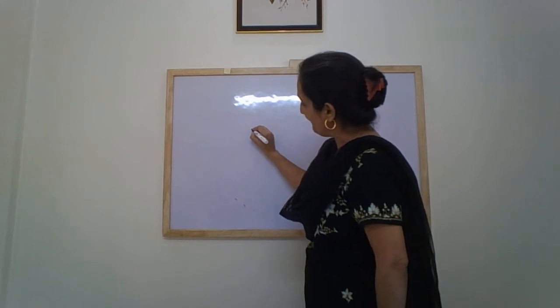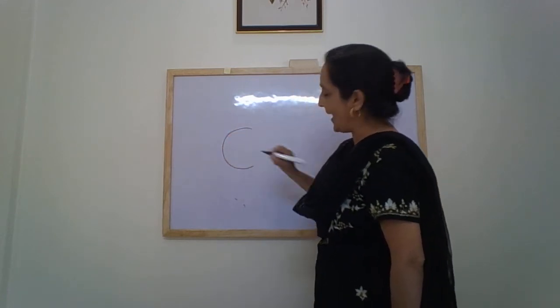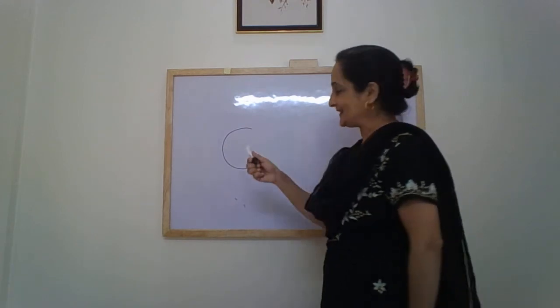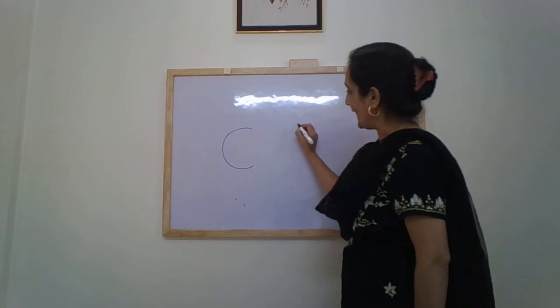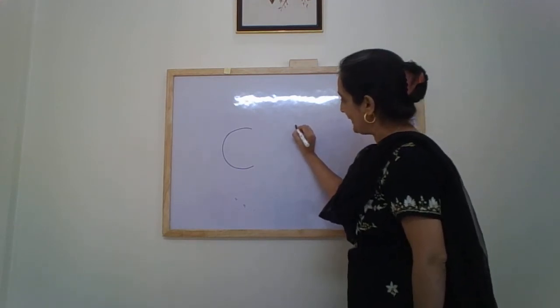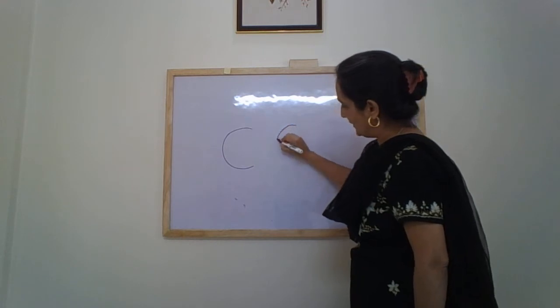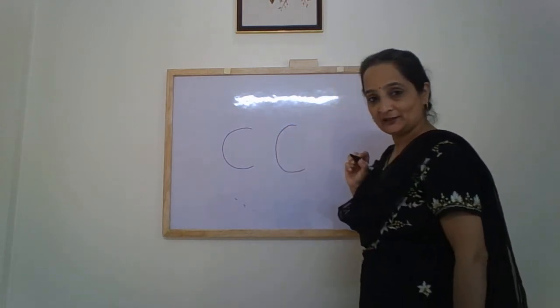Then we go backward. Backward. This is a backward curve. See? I am keeping the crayon and then I am going backward. This is backward curve.